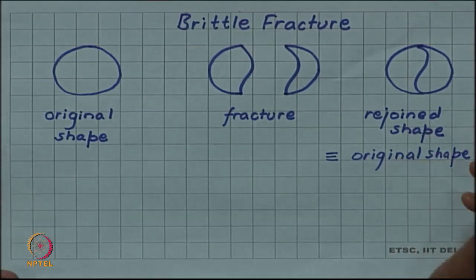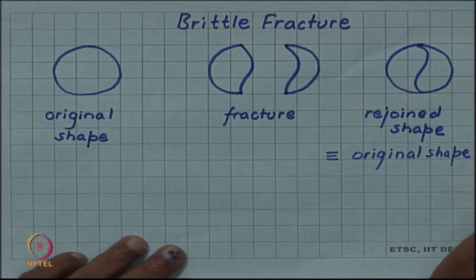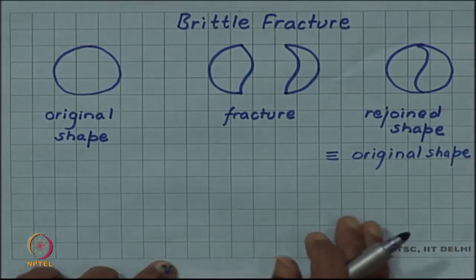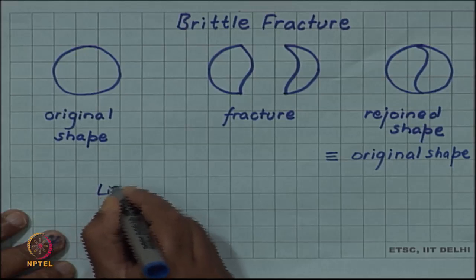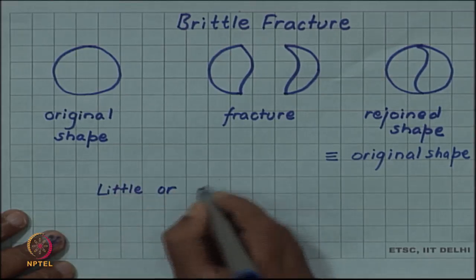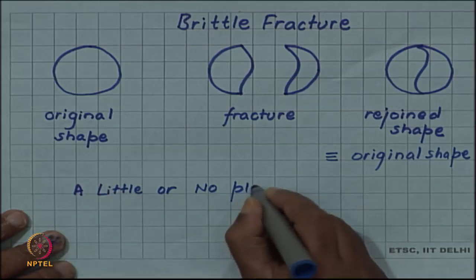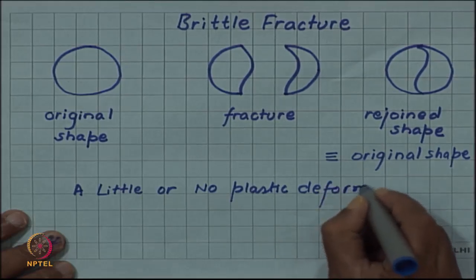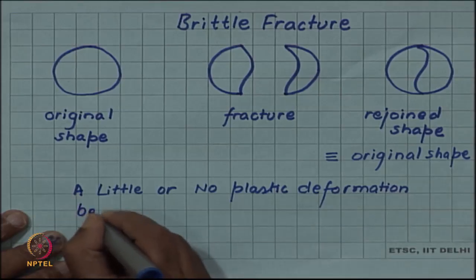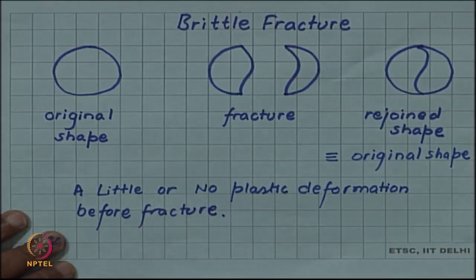All of us know that if some glass piece breaks, we can join them with some adhesive to regain the original shape. This means that there has not been much plastic deformation before fracture — so there is little or no plastic deformation before fracture.